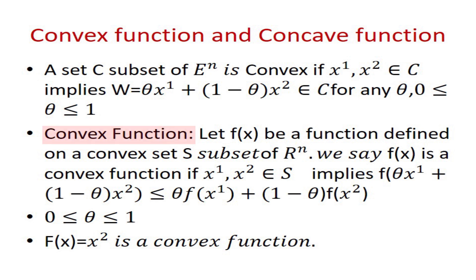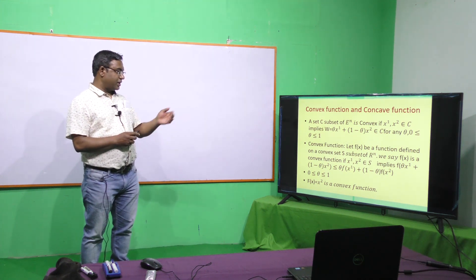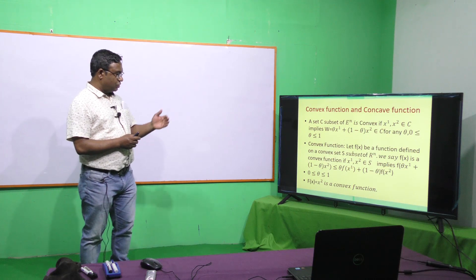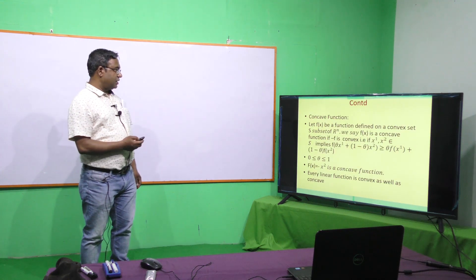A convex function: let f(x) be a function defined on a convex set S. Then f(x) is a convex function if x1, x2 belonging to S implies f(θx1 + (1−θ)x2) ≤ θf(x1) + (1−θ)f(x2), for θ between 0 and 1. If this condition is fulfilled, the function is said to be convex. For example, f(x) = x² is a convex function.